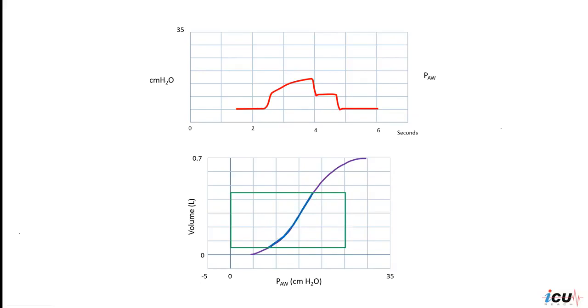The stress index here is 0.7. You can see this is outlined in the area and the calculation of the stress index by the computer is 0.7, so this patient is ventilated in the area with derecruitment of the lung.